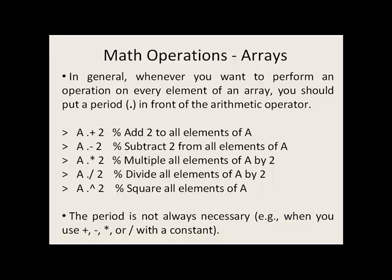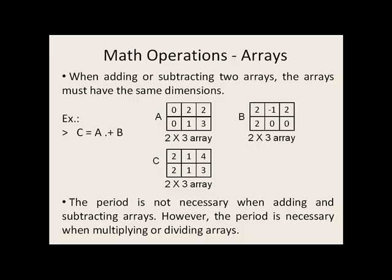Technically, the period is not always necessary, but it doesn't hurt to put it in. For example, if you want to add, subtract, multiply, or divide by a constant, you don't need the dot. When adding or subtracting two arrays, keep in mind that the arrays must have the same dimension. So if A is a 2 by 3 and you want to add B to A, B must also be a 2 by 3, and the resulting array will also be a 2 by 3. In this case, the period is technically not necessary when adding and subtracting arrays. However, it is necessary if you want to do matrix multiplication or division.